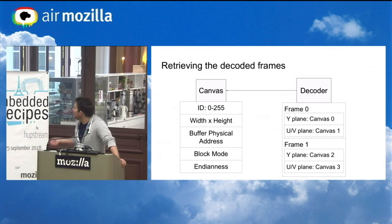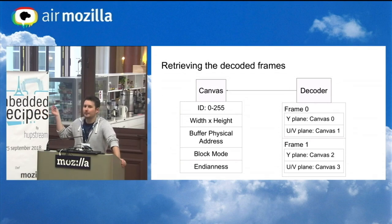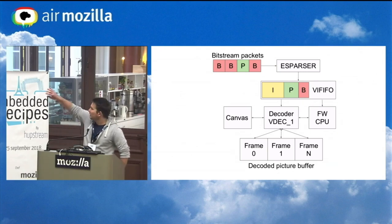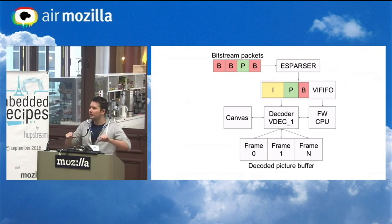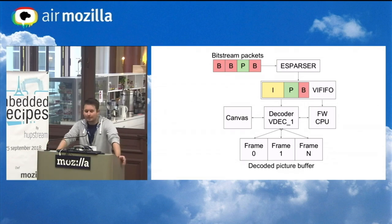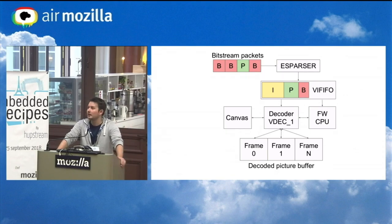On the decoder side, you just say: I have frame number 0, it's the luma plane, it's linked to canvas number 0 — and you write basically the canvas indexes into the decoder. It doesn't care about the actual physical addresses. This is a very high-level overview of how the video decoder works: you write packets into the elementary stream parser, it feeds the video hardware, and then the firmware CPU and the decoder IP work together to decode the frames. The frame buffer addresses are gotten from the Canvas IP, and then we get our decoded frames.